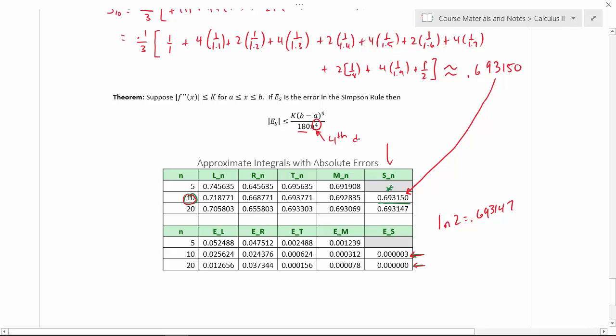So this is fourth degree, okay? Order 1 over n to the fourth, essentially, is what we have with Simpson's rule.